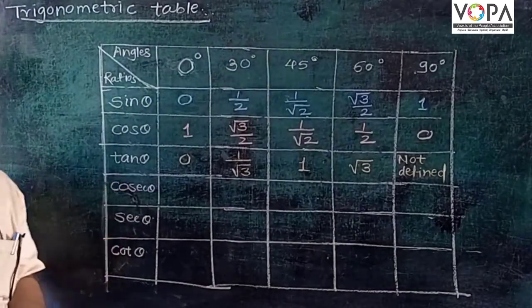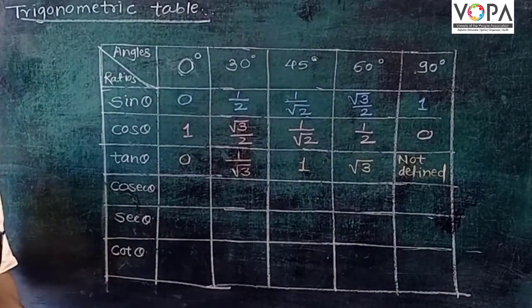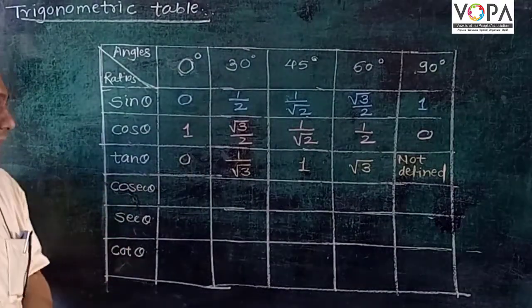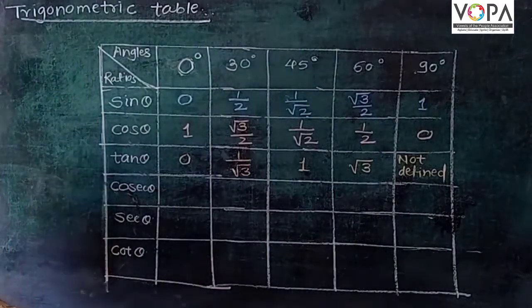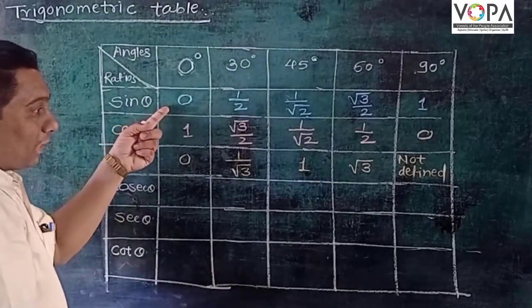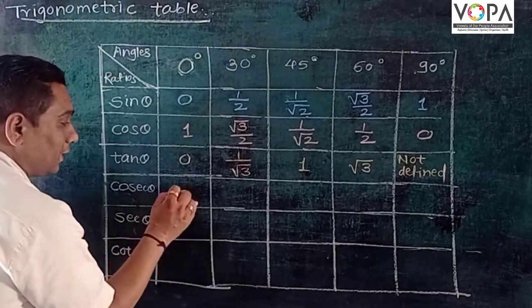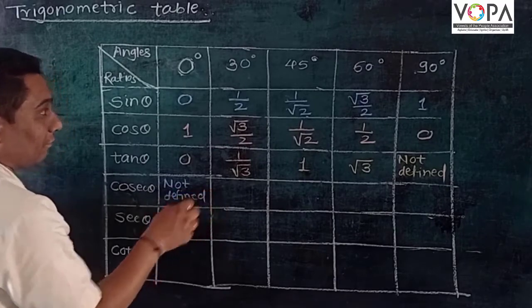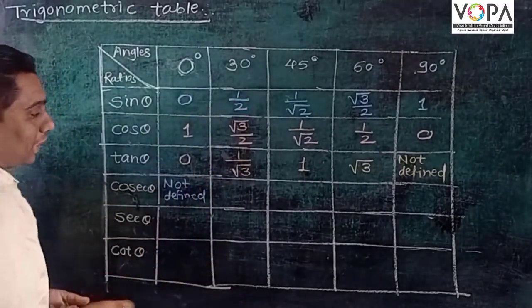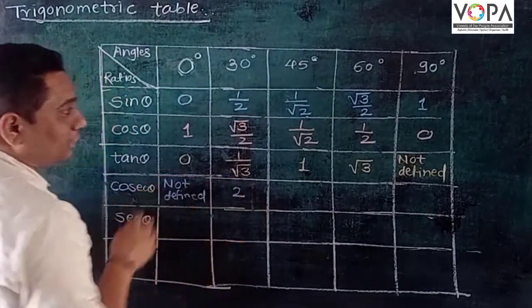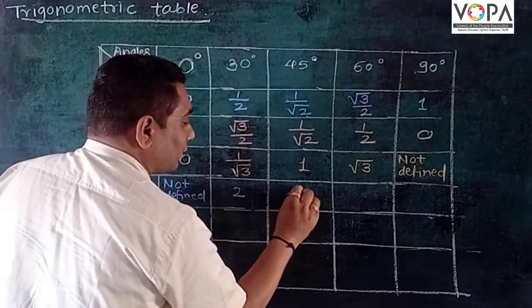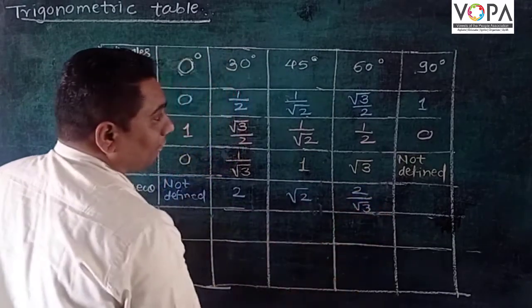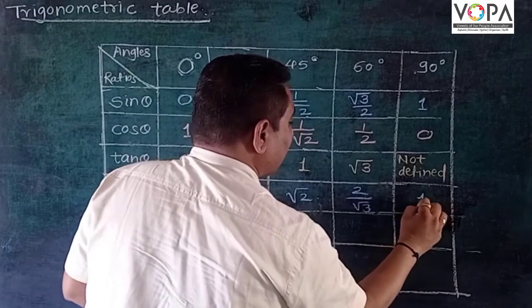In a similar way, we can calculate the table for cosec θ. Cosec θ = 1/sin θ. So cosec 0° = 1/0, which is not defined. Cosec 30° = 1/(1/2) = 2. Cosec 45° = 1/(1/√2) = √2. Cosec 60° = 2/√3. Cosec 90° = 1/1 = 1.